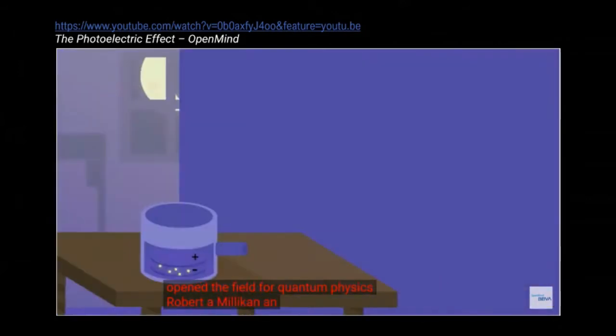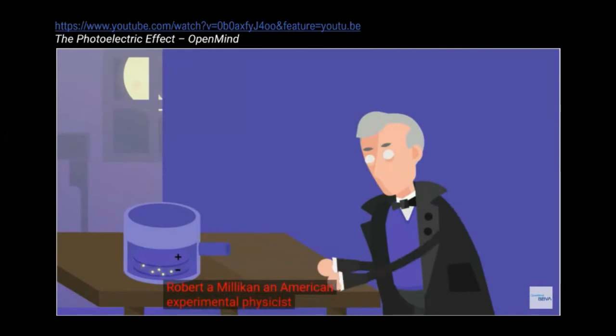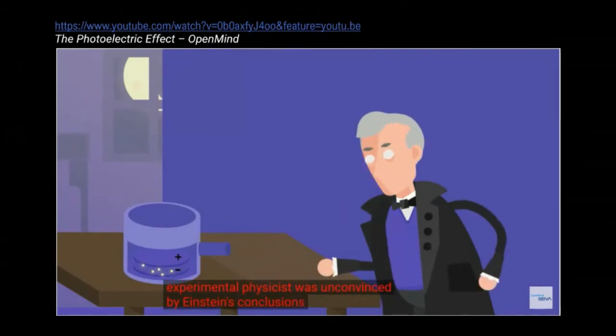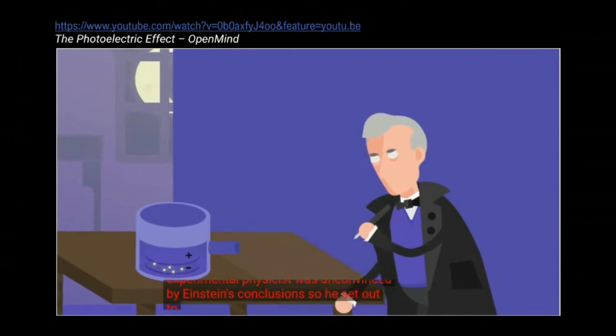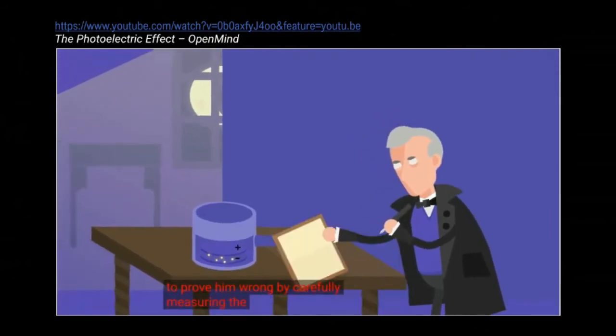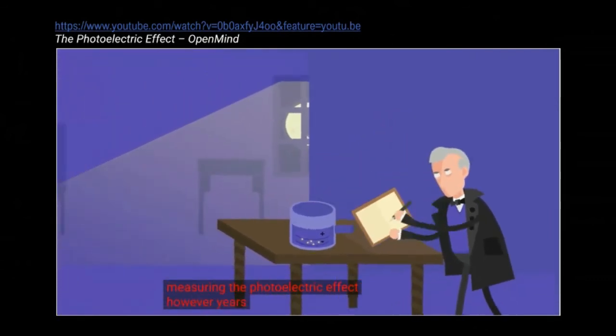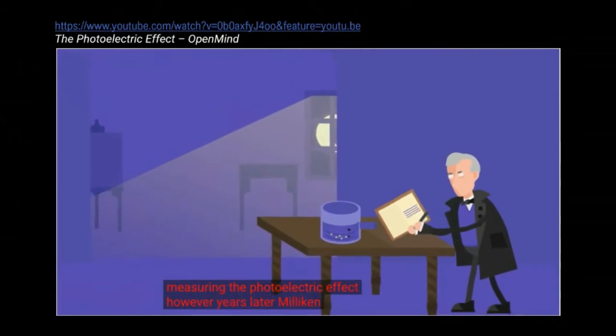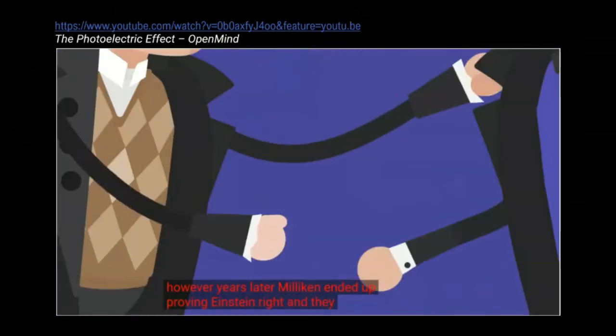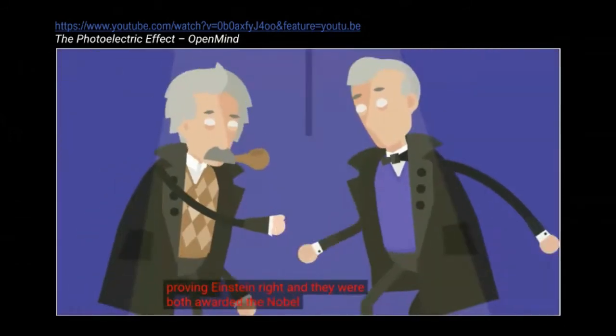Robert A. Milliken, an American experimental physicist, was unconvinced by Einstein's conclusions. So he set out to prove him wrong by carefully measuring the photoelectric effect. However, years later, Milliken ended up proving Einstein right, and they were both awarded the Nobel Prize in Physics.